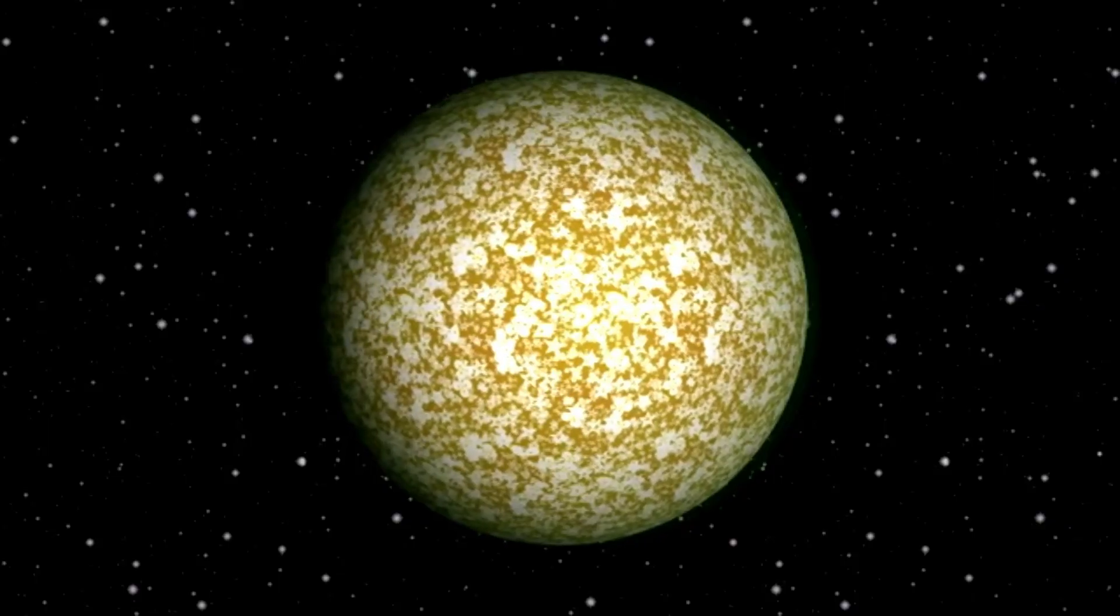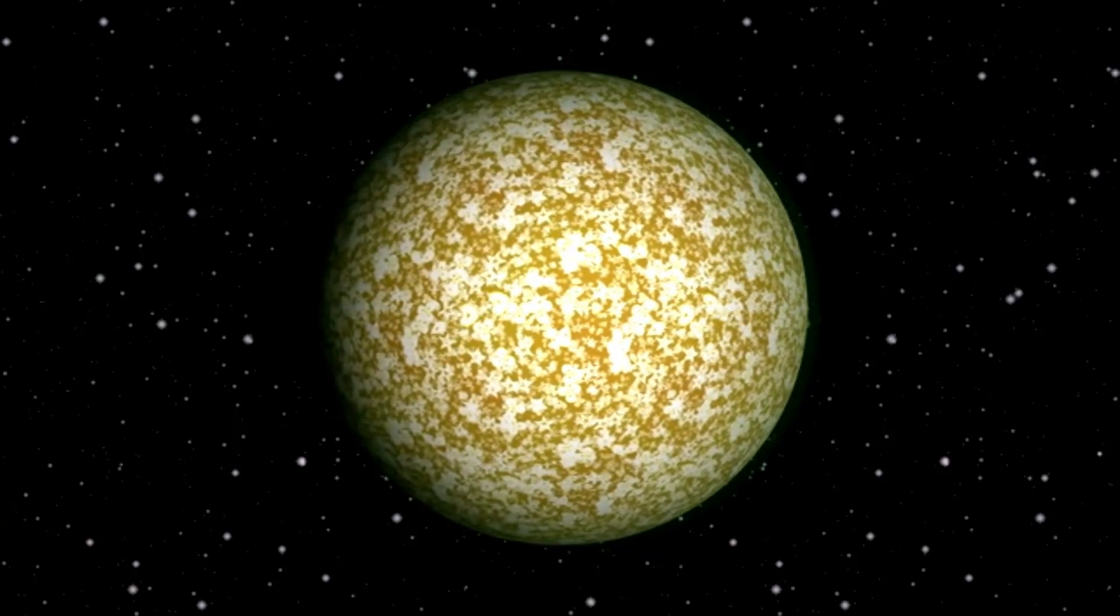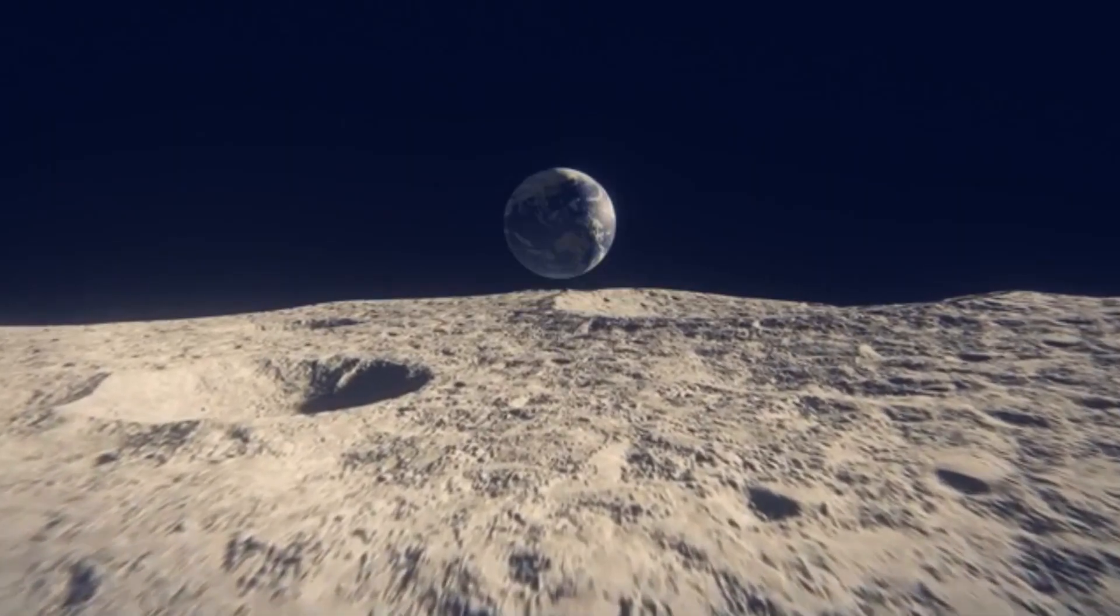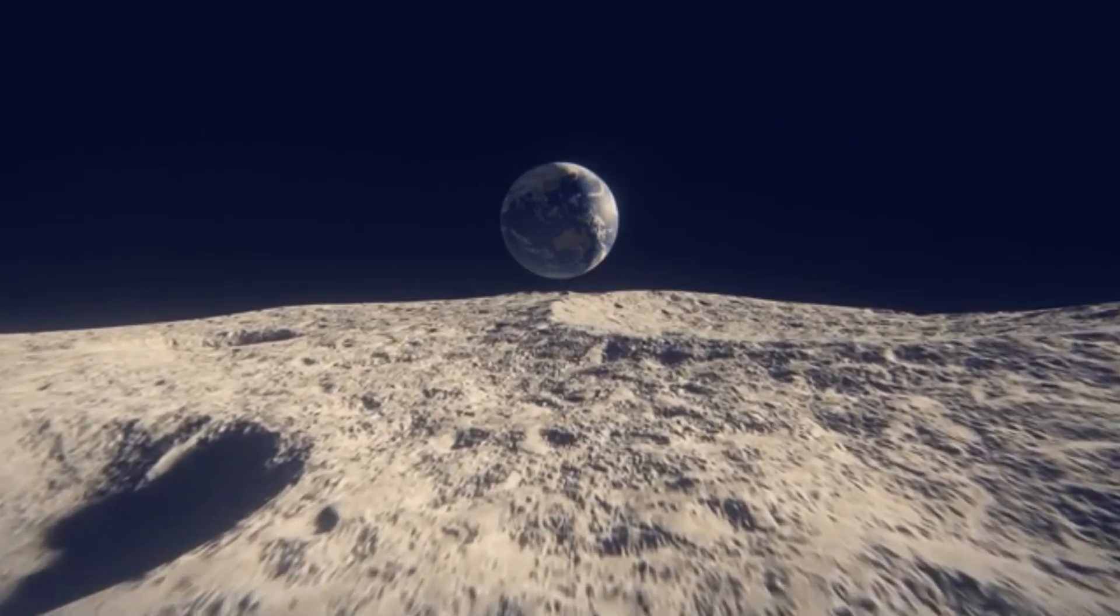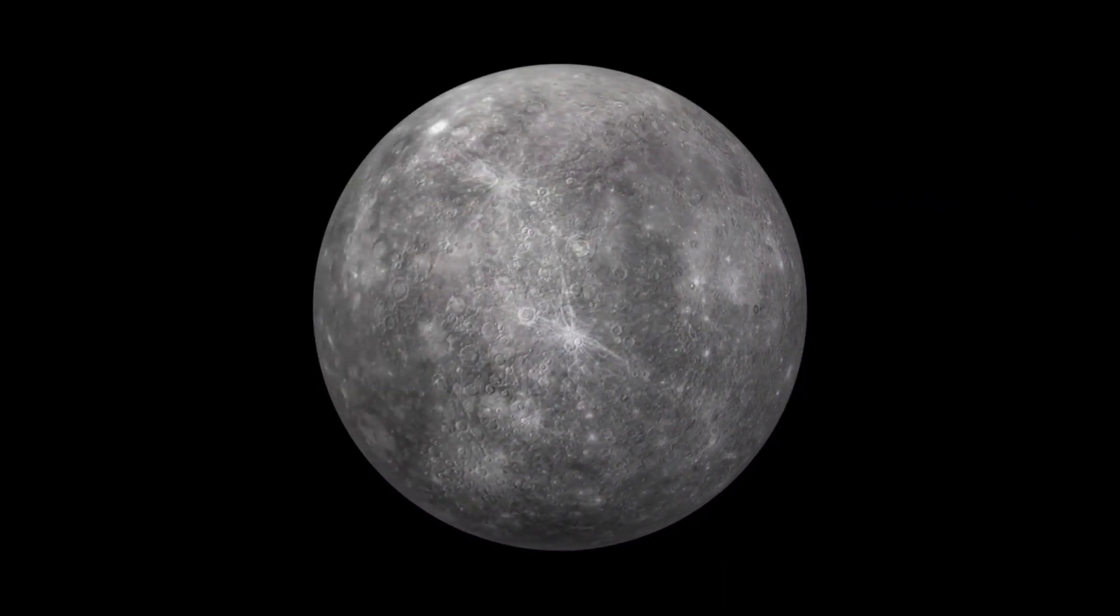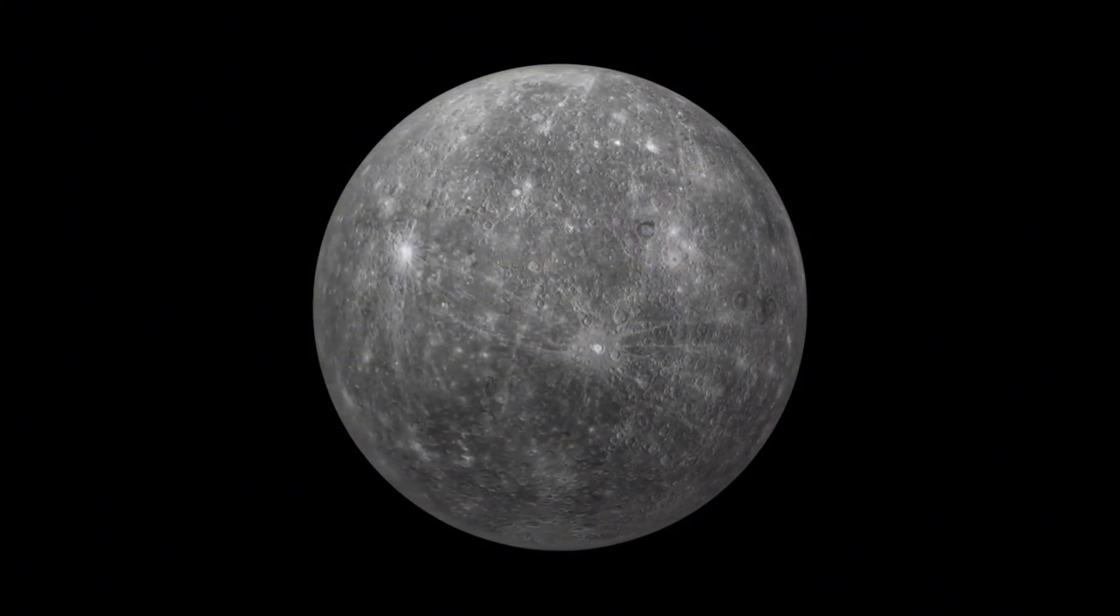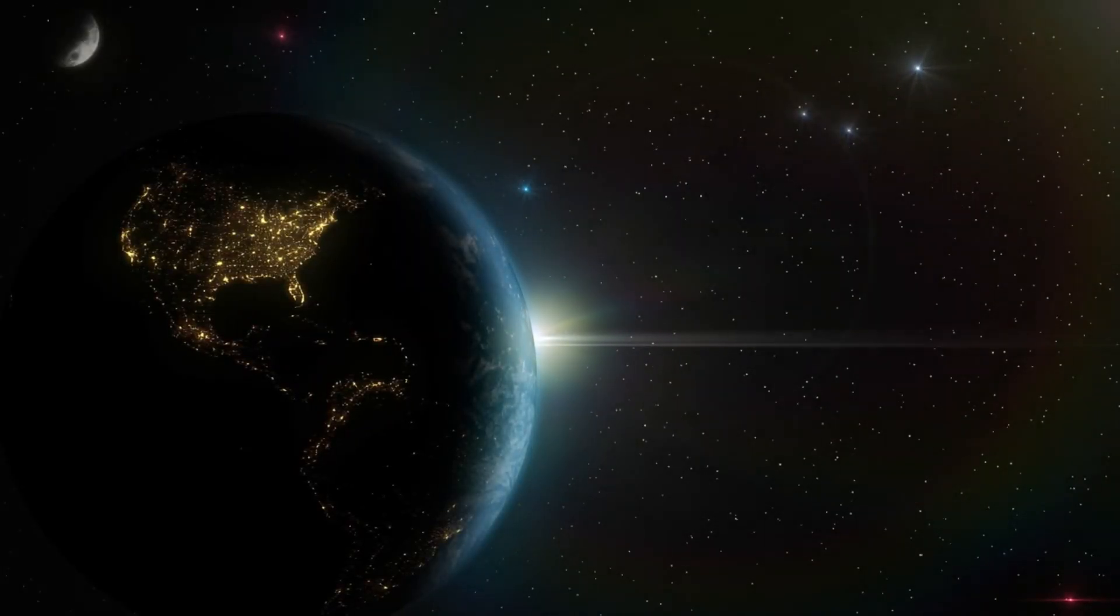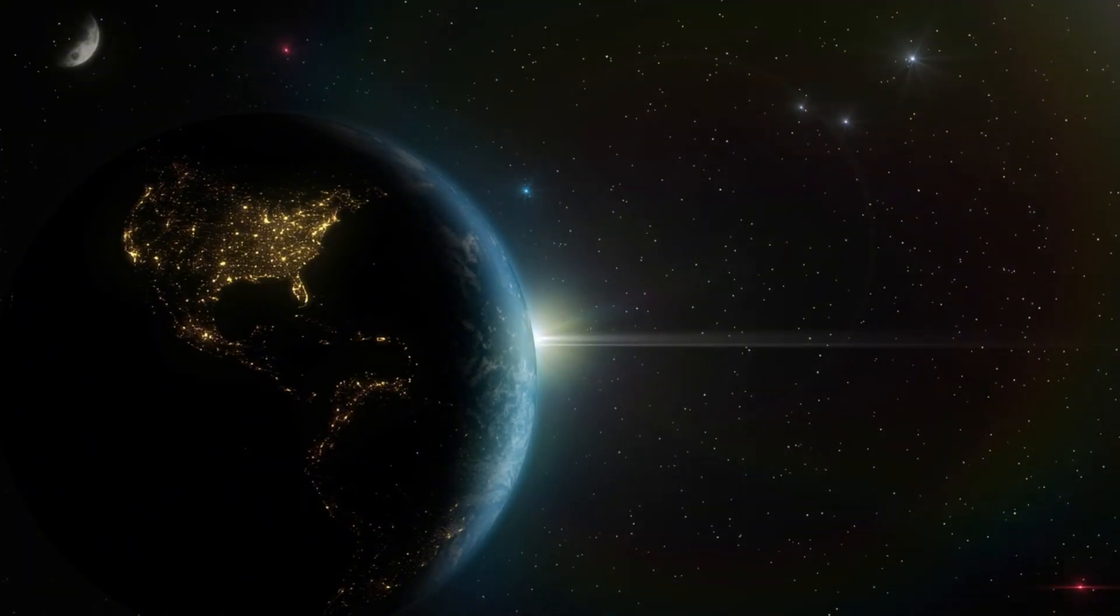Centuries ago, the domain beyond our solar system was largely unknown. Since then, astronomers have identified over 4,000 exoplanets orbiting distant stars, demonstrating the extent of human ingenuity. However, NASA views these discoveries as just the tip of the cosmic iceberg, with trillions of exoplanets still awaiting discovery.